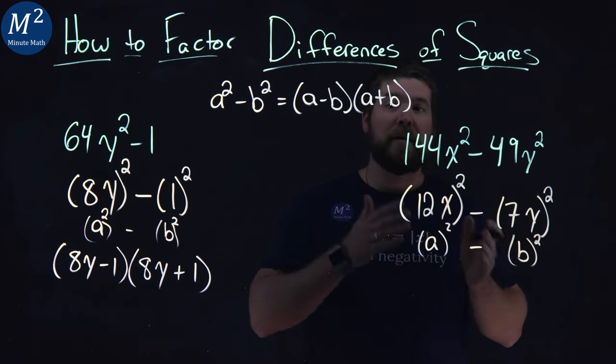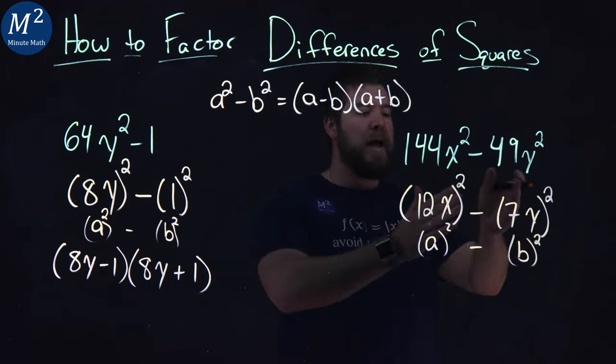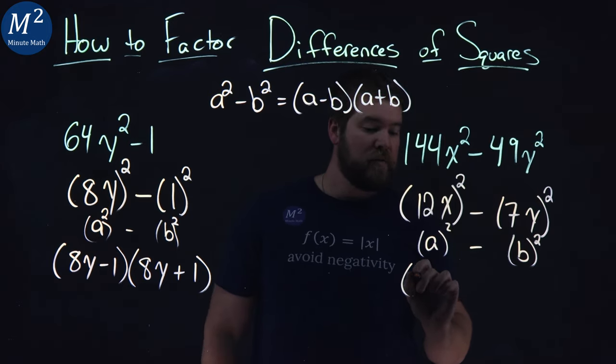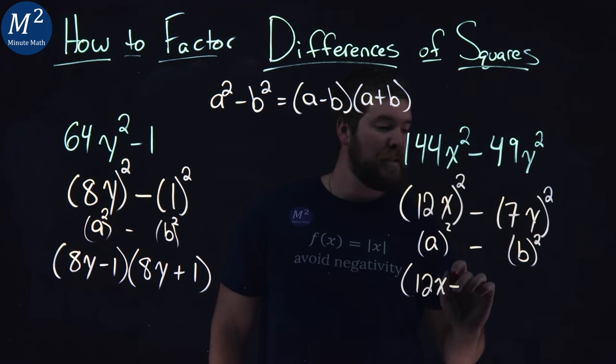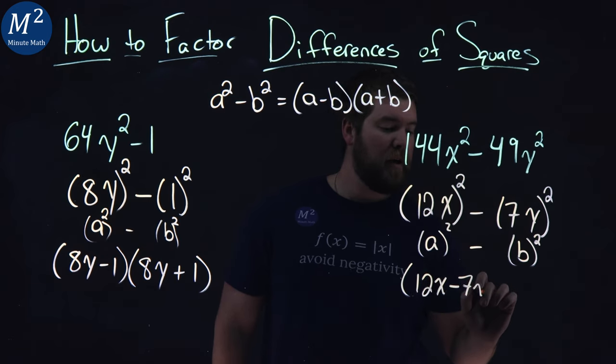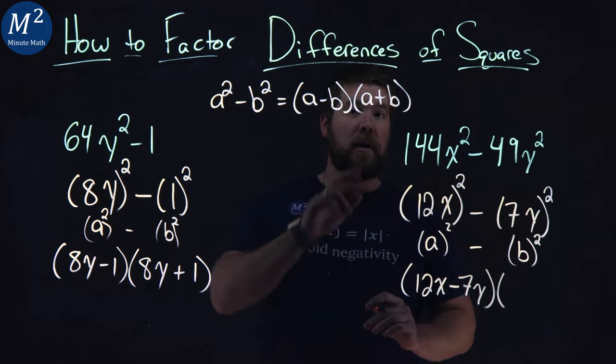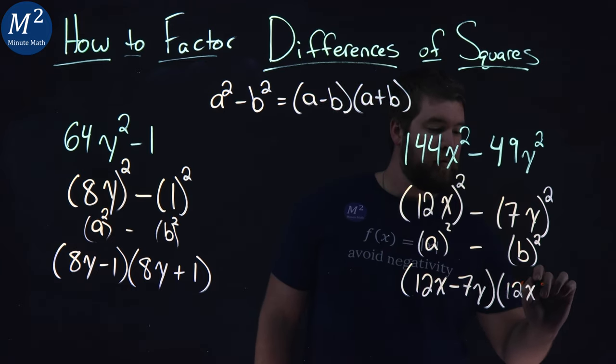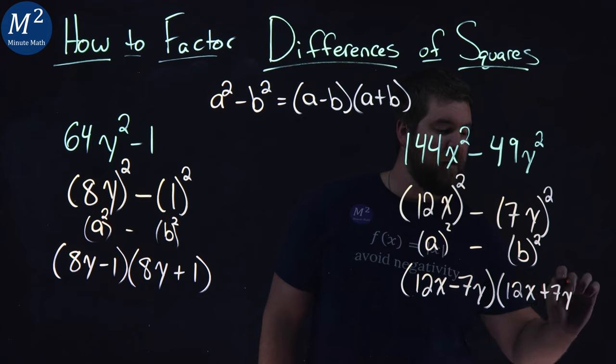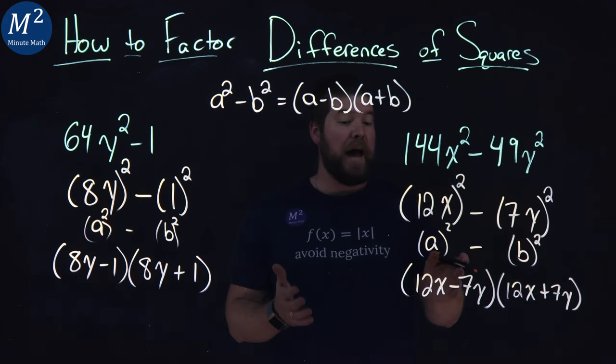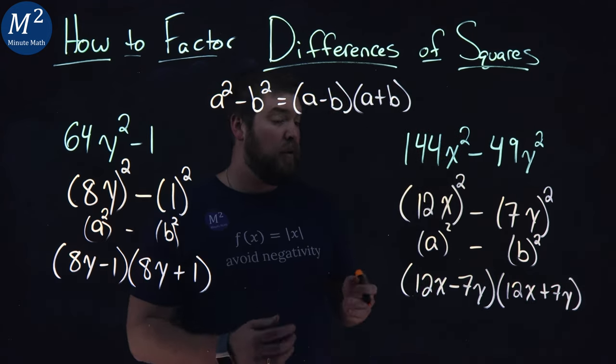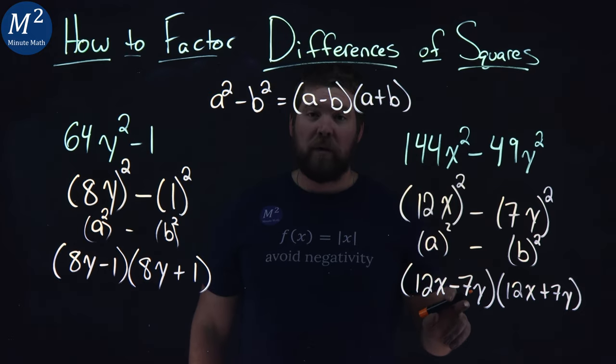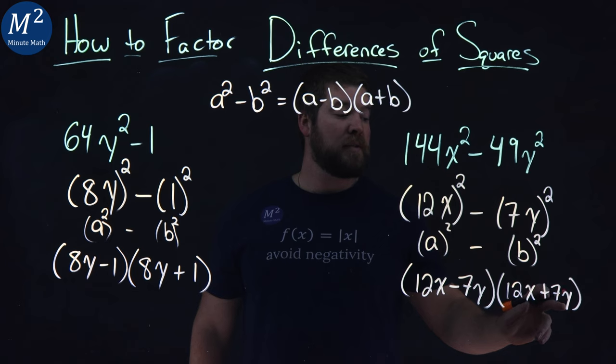And we can square it to see our formula. We have our a and b value. Now we apply our formula. a minus b, so 12x, minus our b value, which is 7y, times our a plus b. 12x plus 7y right there. And there we have it. Our second polynomial factors using our formula here to be 12x minus 7y all times 12x plus 7y.